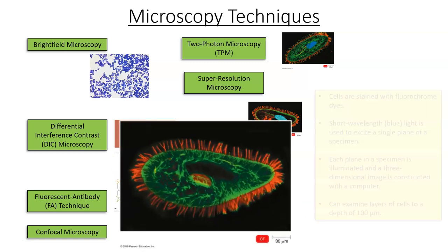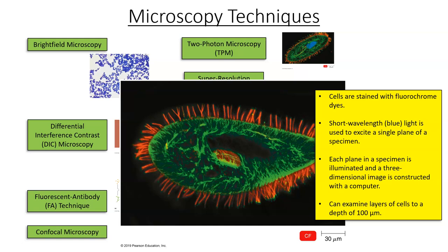Confocal microscopy is similar to the fluorescent antibody technique in that it uses very short wavelength light and fluorochrome dyes, producing brightly colored images. However, it excites a single plane of the specimen, allowing us to see not just the shape but some internal structuring. Each plane in a specimen is illuminated, and a three-dimensional image is constructed by a computer — this is the first technique in our list where light data is processed by a computer to generate 3D images. Confocal microscopy can examine layers of cells to a depth of 100 micrometers, with progressively better resolving power.